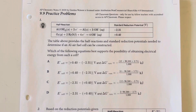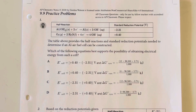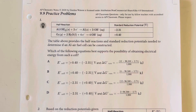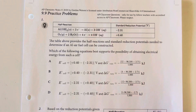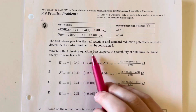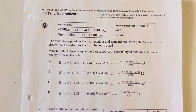9.9 practice problems. The table above provides the half-cell reactions and standard reduction potentials needed to determine if an aluminum-air-fueled cell can be constructed. Which of the following equations best supports the possibility of obtaining electrical energy from such a cell?